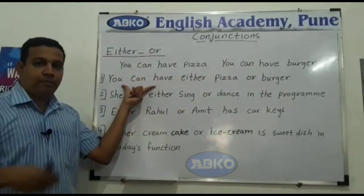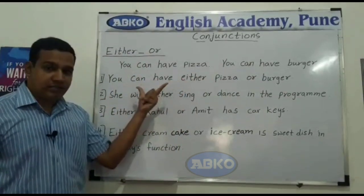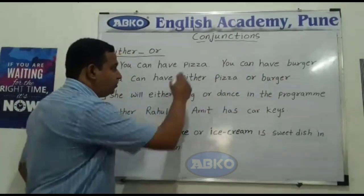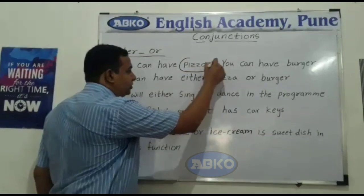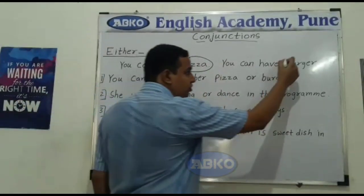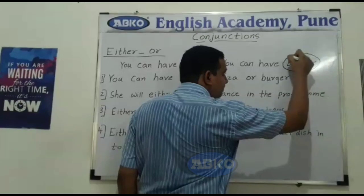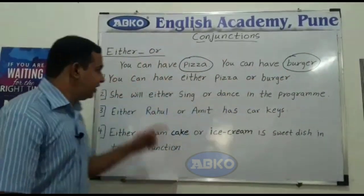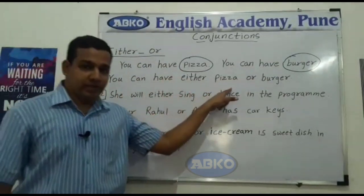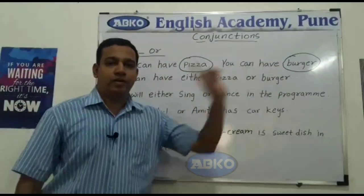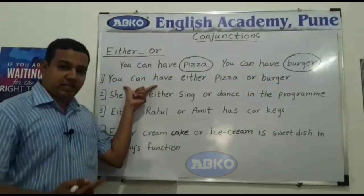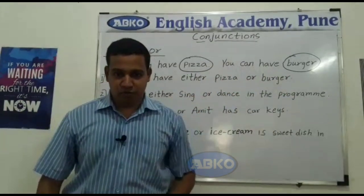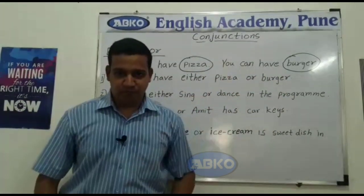You can have — आप ले सकते हो. क्या ले सकते हो? Either pizza or burger. यहाँ पे हमारे पास दो options हैं — एक option है pizza, दूसरा option है burger. इन दोनों में से अगर किसी एक को चुनना है, तो हम कैसे बोलेंगे? You can have either pizza or burger. तुम पीज़ा ले सकते हो या बर्गर ले सकते हो.